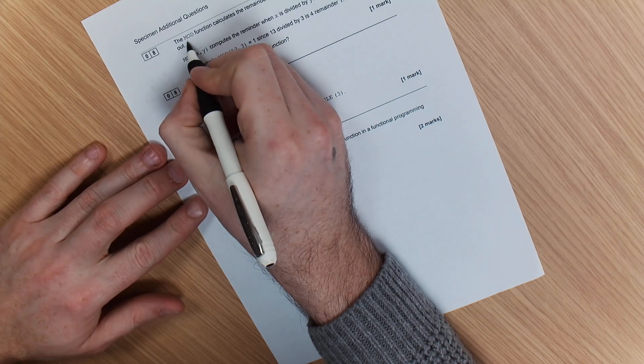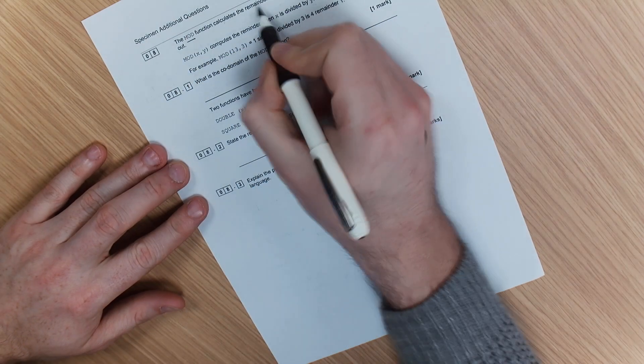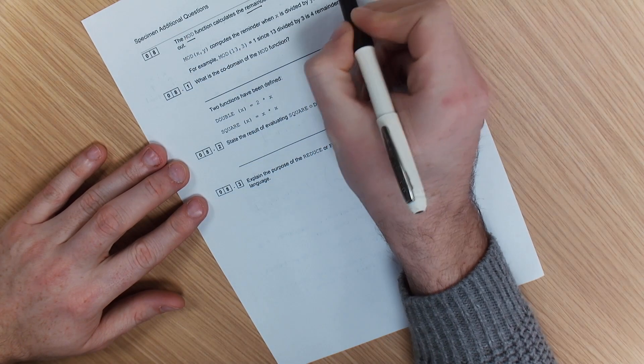Now, looking at this next set of questions, we have the mod function which calculates the remainder after the integer division has been carried out.